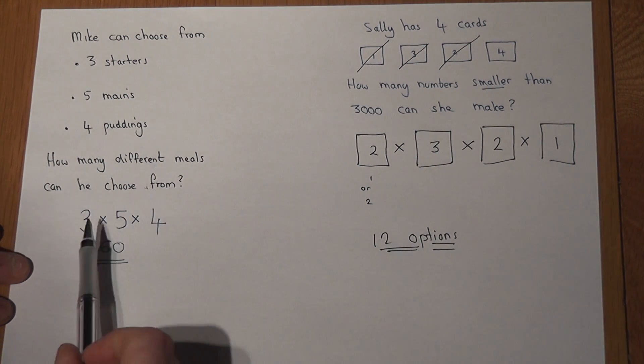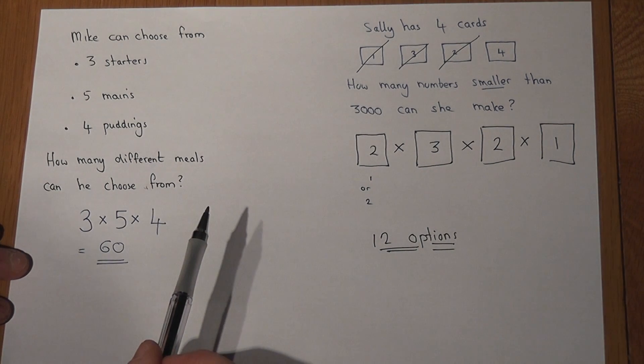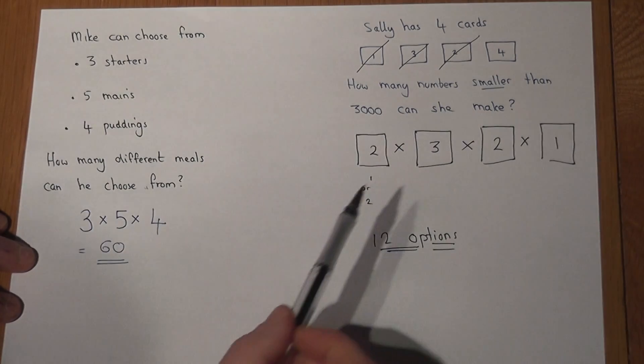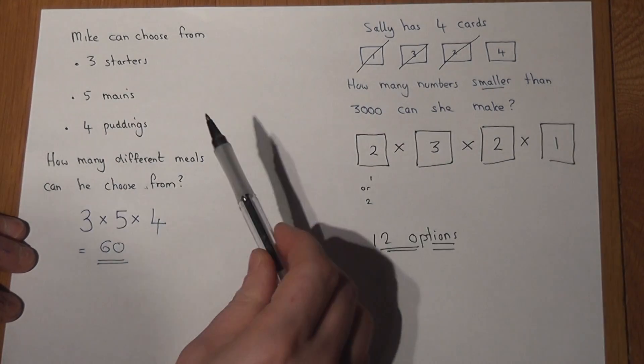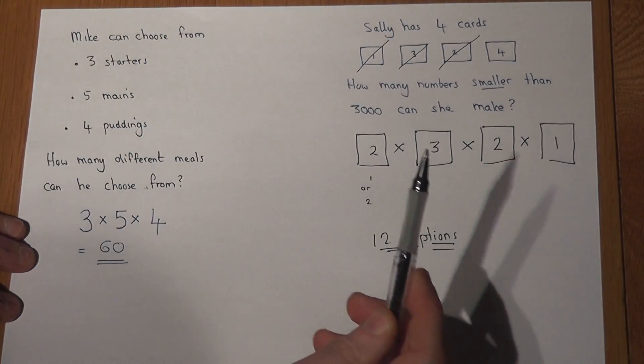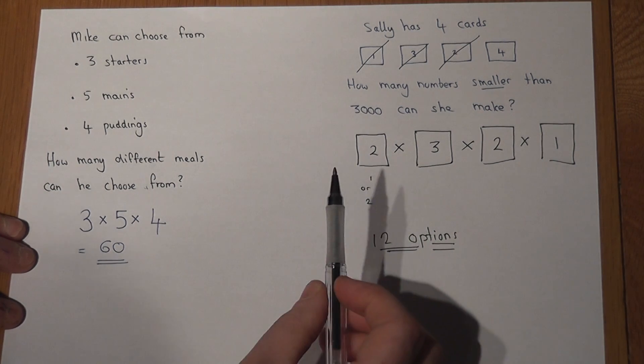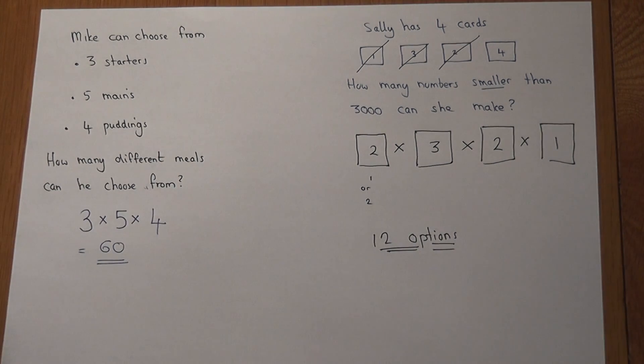So the key idea here is that we multiply the numbers together, but when picking cards out, having got a card, there's then one less card left to choose from, so the numbers decrease in this particular case.